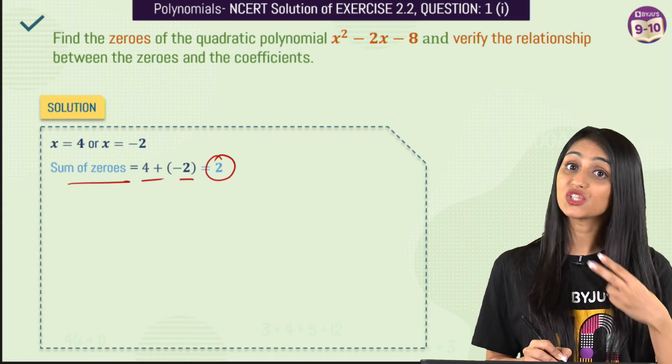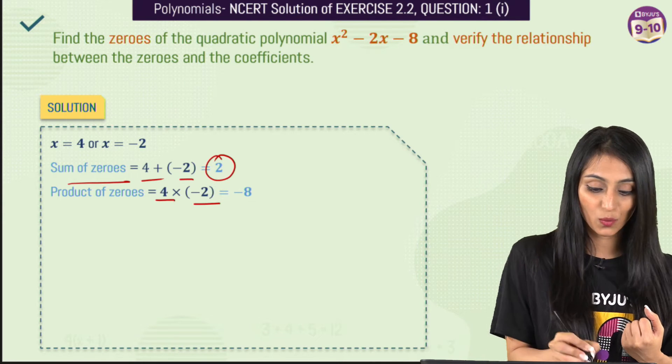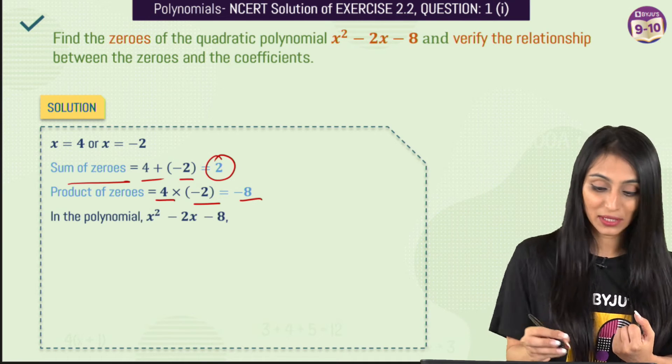Similarly, we will verify, we will check for the other relationship that is product of zeros. That's going to be 4 times minus 2 which is minus 8.